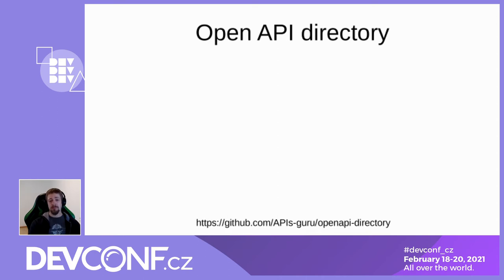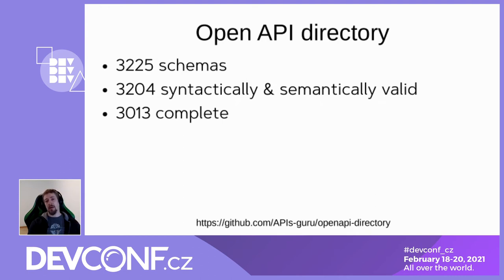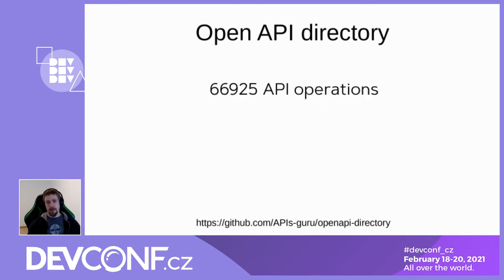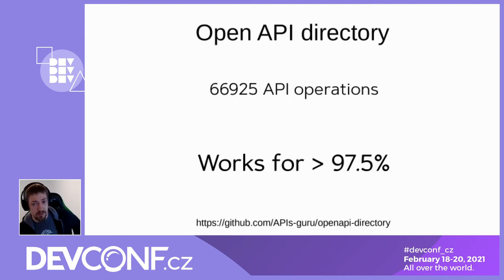There is a project called OpenAPI Directory, which is a collection of various API schemas. At the time of writing, they had 3,225 OpenAPI schemas, which are mostly syntactically and semantically valid in terms of individual keywords. Some of these schemas are incomplete — they contain references to other files that do not exist. But Schema Thesis can process most of them, including semantically invalid or incomplete schemas. If the issue does not affect the data generation, we can work — no problem. In terms of API operations, Schema Thesis works on more than 97%. The rest goes to some edge cases like recursive schemas, logically unsatisfiable ones where you just can't find a fitting example, non-Python regular expressions and similar issues.